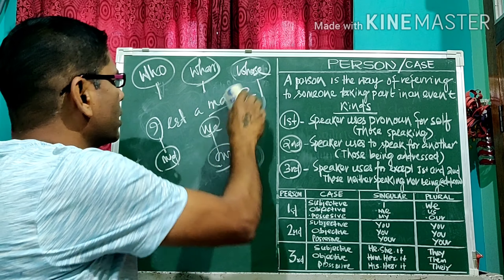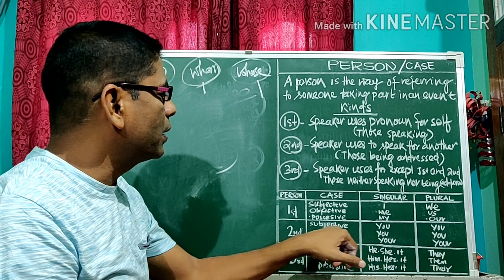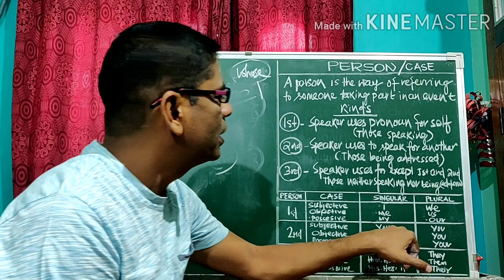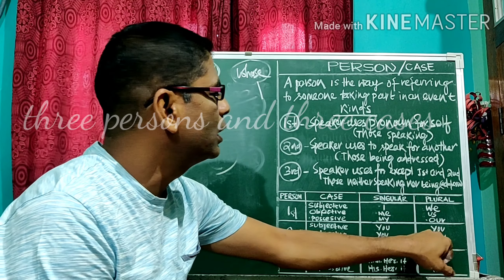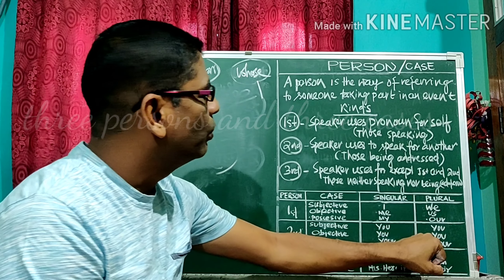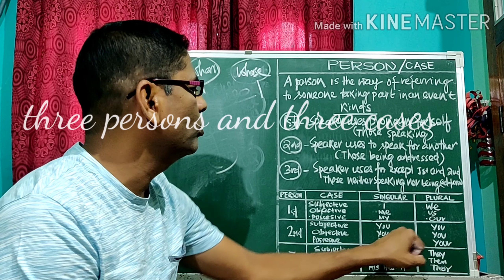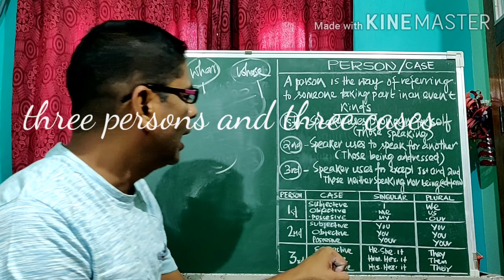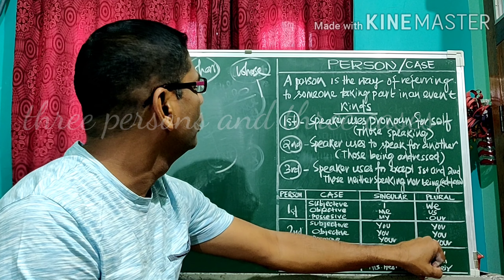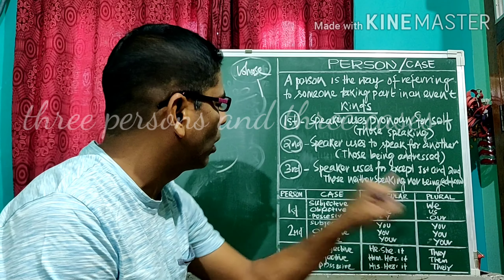Now in second person: subjective case is you — singular and plural both are you. Objective case is also you and you. 'You eat a mango; a mango is eaten by you.' And possessive case is your and your — singular and plural. Whose? Your and your.